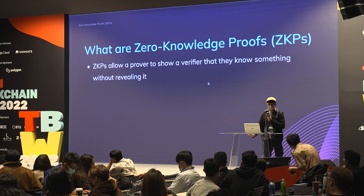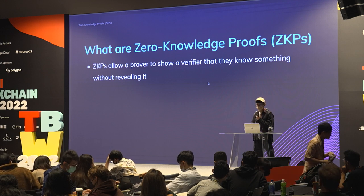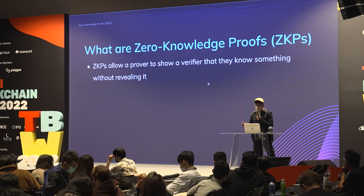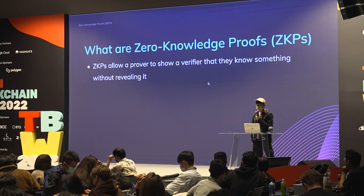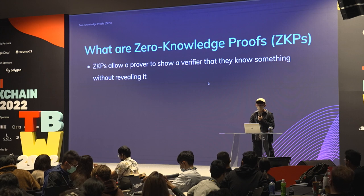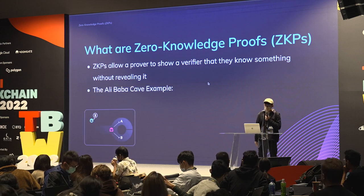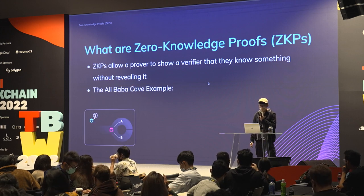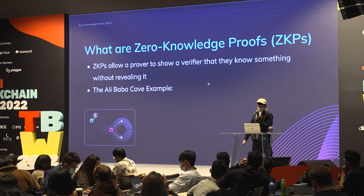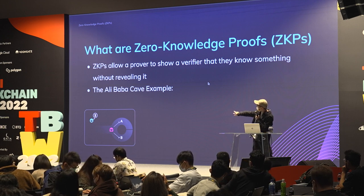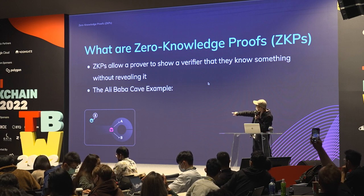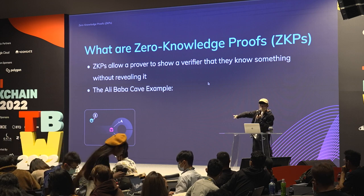This can be prevented by using another kind of proof of knowledge called zero knowledge proofs. ZKPs basically allow you to show a verifier that you know something without revealing any information. There's a classic Alibaba cave example of how it works — we have a cave with two entrances and Alice knows how to get through a secret door.